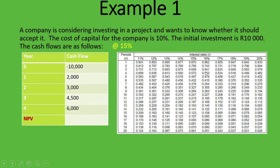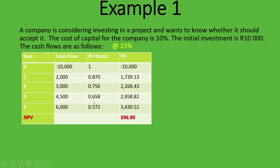We go to the table for 11% to 20% and find the present value factors at 15% for years one to four. Plugging those in and multiplying by the cash flows gives a net present value of 396 rand 90 cents. That's still positive, meaning the IRR is still higher than 15%. So we need to guess an even higher number.